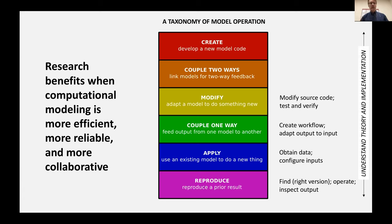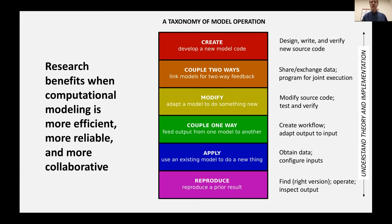In many cases, it's necessary to modify a model to get it to do what you need it to do. That requires knowing the source code and doing testing and verification. There's also interest in coupling models two ways — for example, merging a human system with a biophysical system — which requires some kind of shared execution and exchange of data that can require substantial programming. And finally, there is the creation of a new model to express new ideas. CSDMS is interested in helping to make those various technical steps simpler and more efficient.